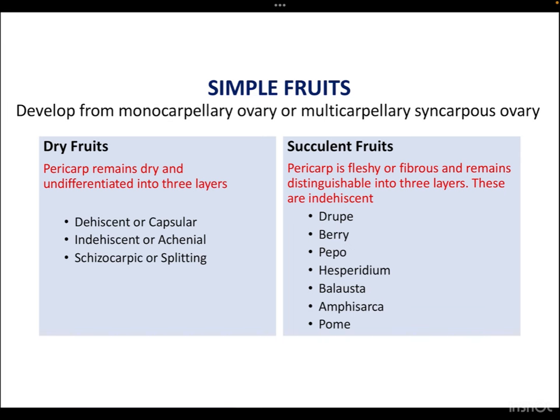In dry fruits, the pericarp — the outer wall of the fruit — after fully maturing can be divided into three portions: epicarp (the outer portion), mesocarp (the middle portion), and endocarp (the innermost portion just above the seed). In dry fruits, this pericarp remains dry and undifferentiated into these three layers. It includes dehiscent or capsular fruits, indehiscent or archennial fruits, and schizocarpic or splitting fruits. In succulent fruits, the pericarp is fleshy or fibrous and remains well distinguishable into three layers, including drupe, berry, pepo, hesperidium, belosta, episarka, and pome.